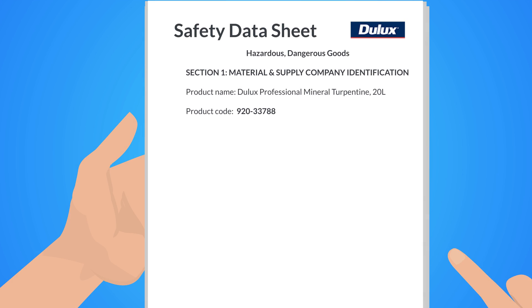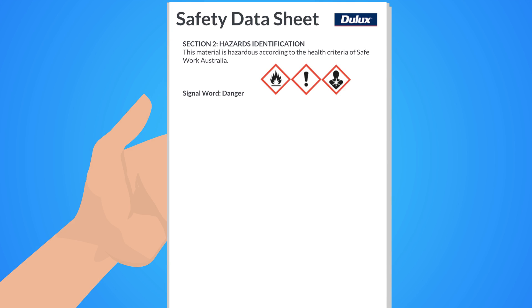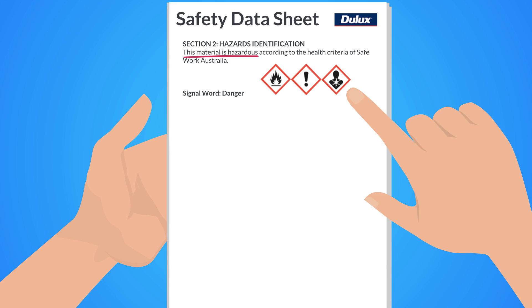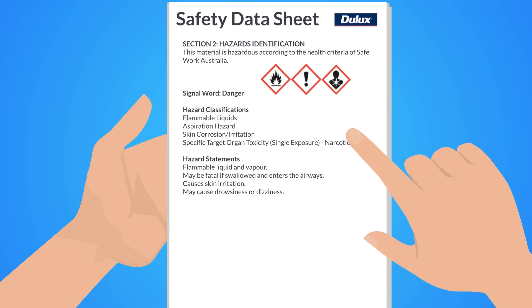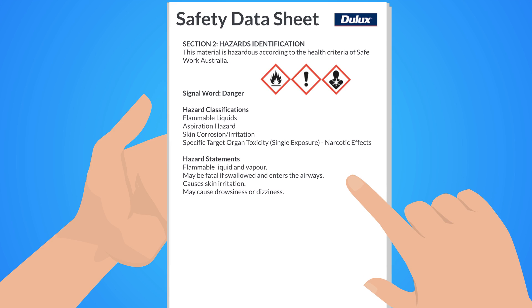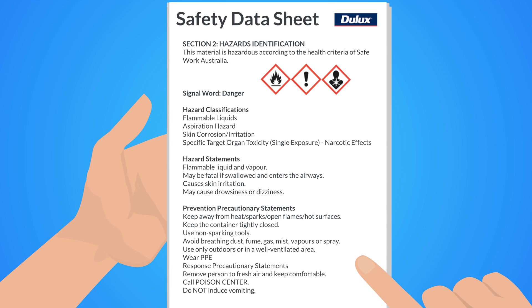First up is the product name and product code. In Section 2, we can see the substance is rated as hazardous with the signal word danger, as well as the assigned GHS pictograms. The hazard classifications and hazard statements are then listed — this is undoubtedly must-read information. The prevention and precautionary statements then follow, and this is also a must-read.